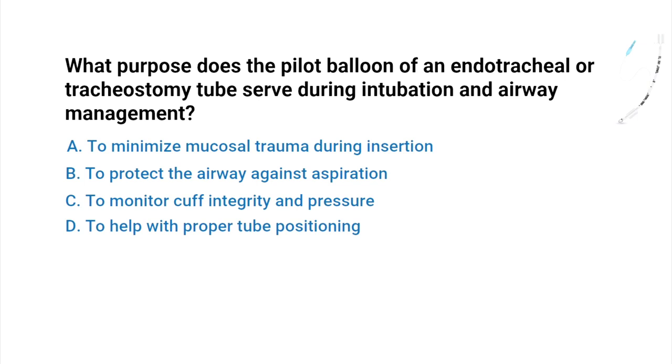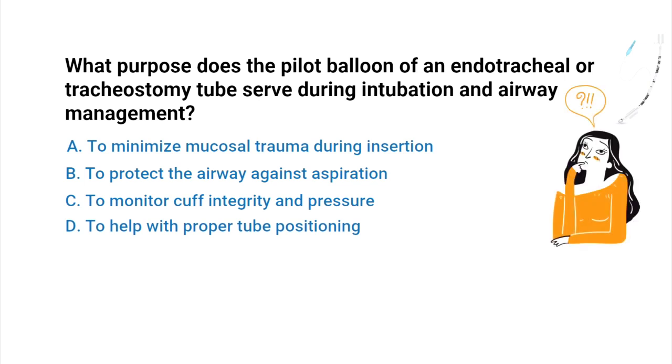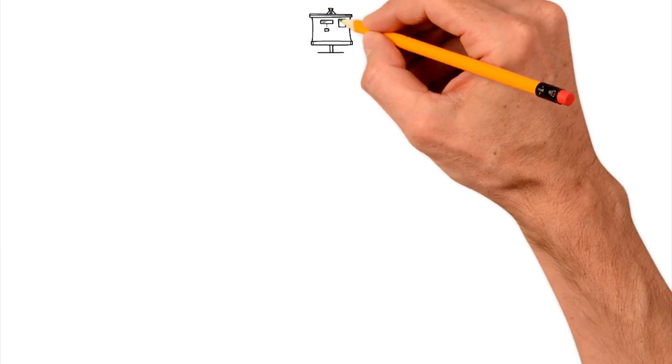B: to protect the airway against aspiration. C: to monitor cuff integrity and pressure. Or D: to help with proper tube positioning. Do you know the answer? Well, let's break it down.